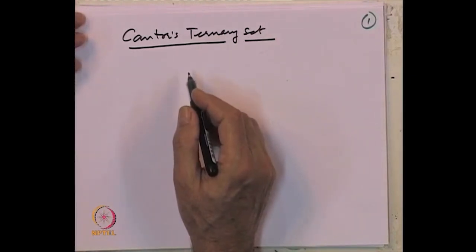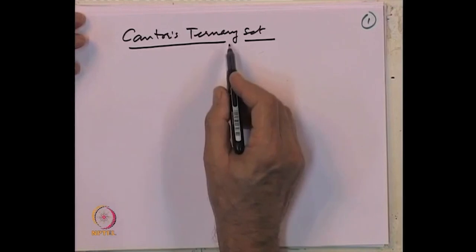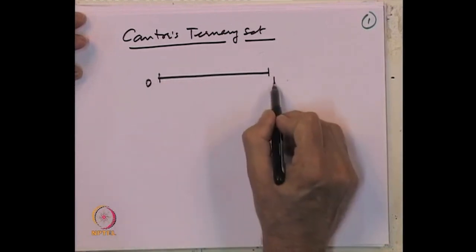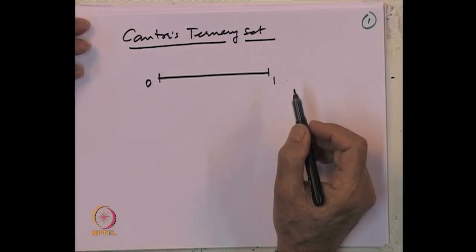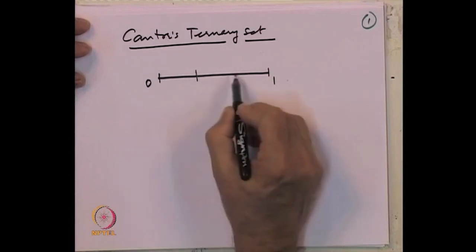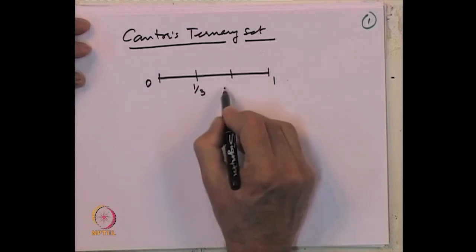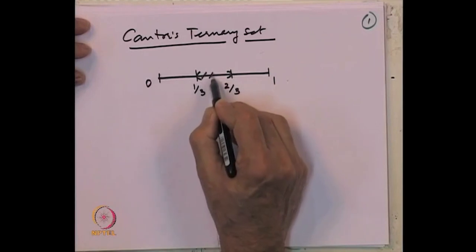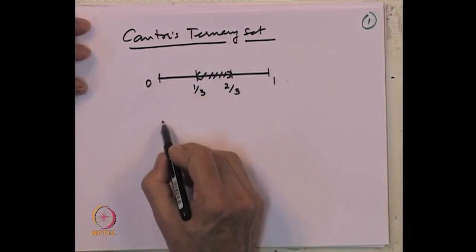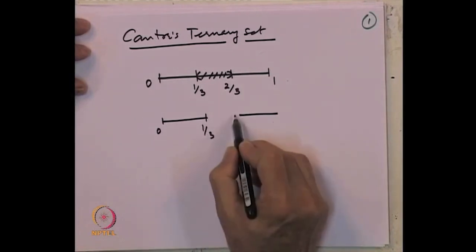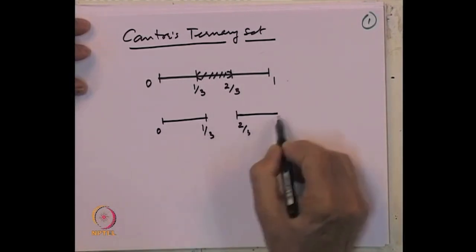Cantor's ternary set is named after mathematician George Cantor, who first defined it. It is called 'ternary' because it involves ternary expansions of real numbers. We are going to construct it. As step 1, look at the interval 0 to 1. Divide it into 3 equal parts — at 1/3 and 2/3 — and remove the middle open portion. This open portion removed from the interval [0,1] gives us 2 closed pieces: [0, 1/3] and [2/3, 1].